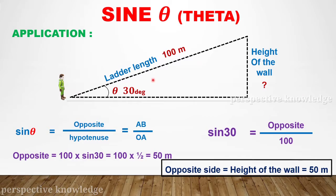Here is a diagram. The distance — the length of the ladder — is 100 meters. The height of the wall corresponds to the 30-degree angle, so the height of the wall is what we want to find.